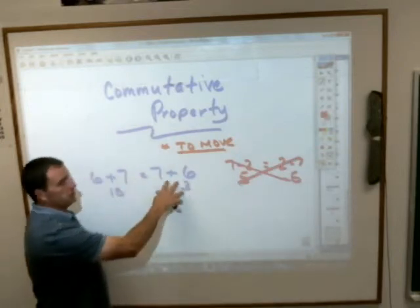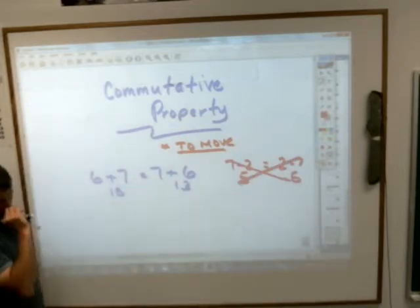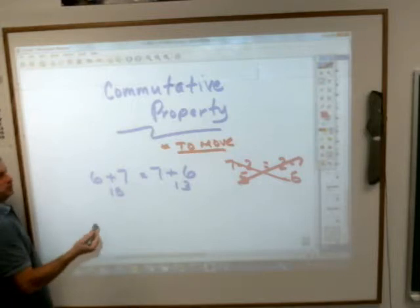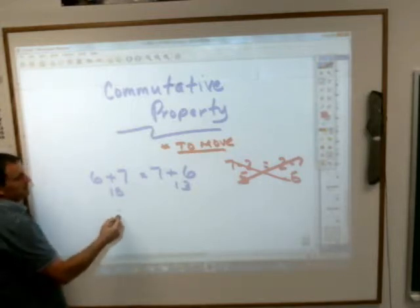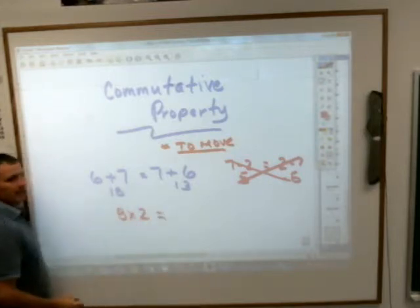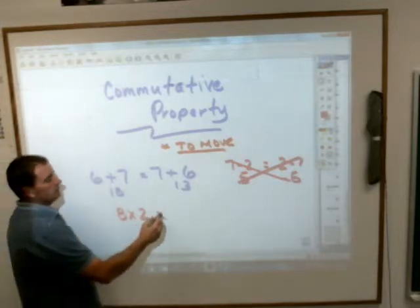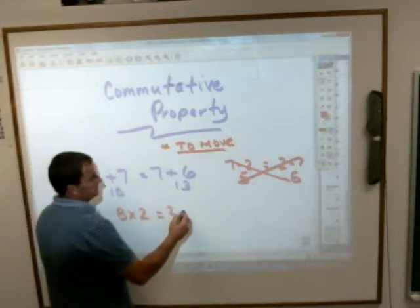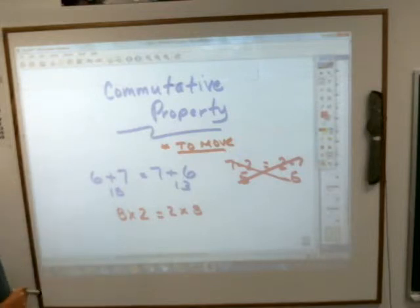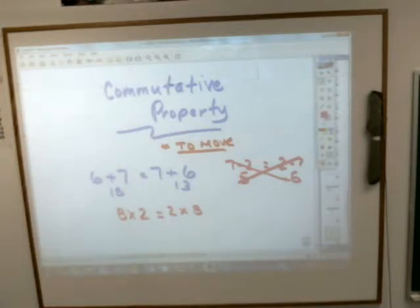It works with addition, because you can change the order. And it also works with multiplication. That's the reason why 8 times 2 is the same thing as 2 times 8. The commutative property says that with addition and multiplication, you can change the order. And that's a good thing.